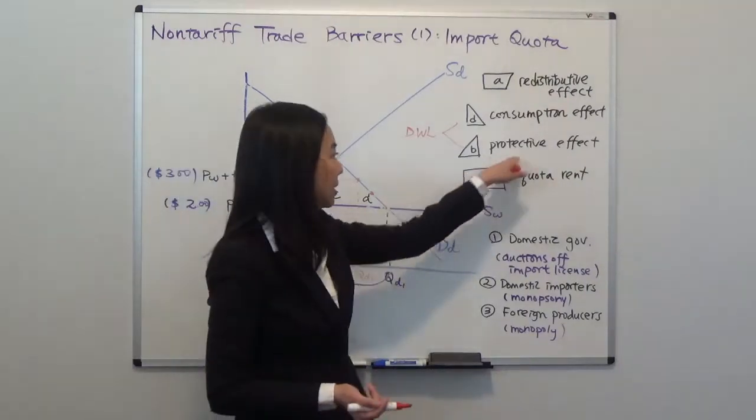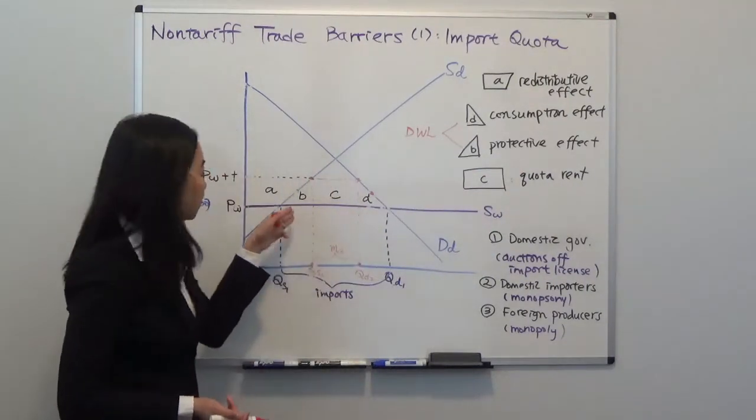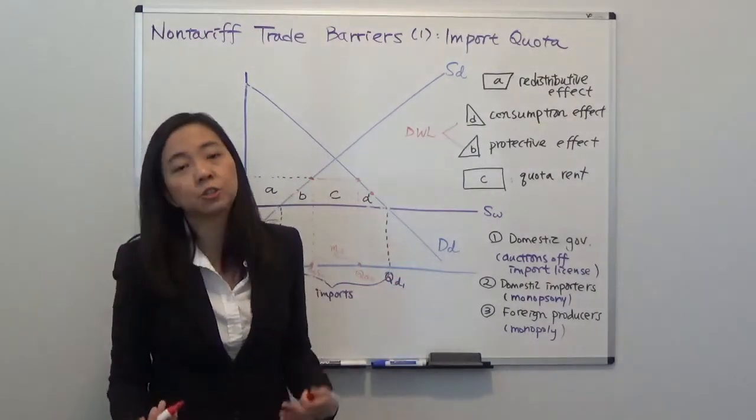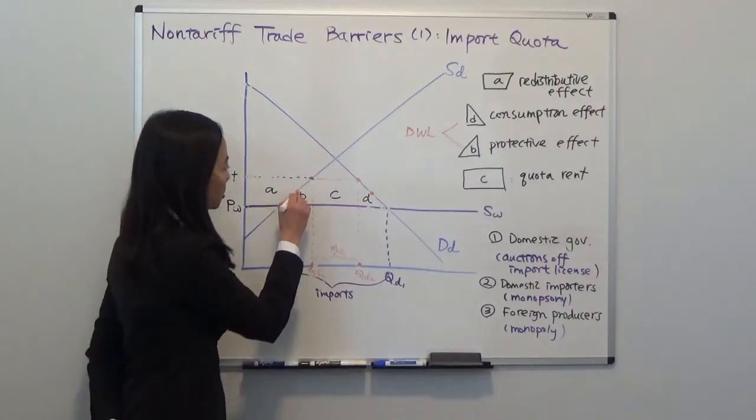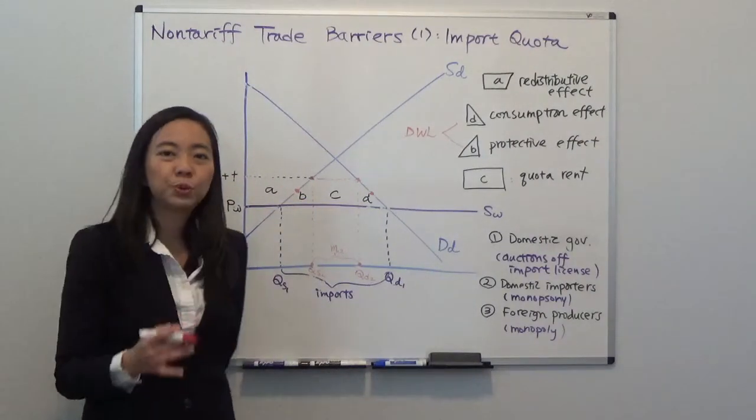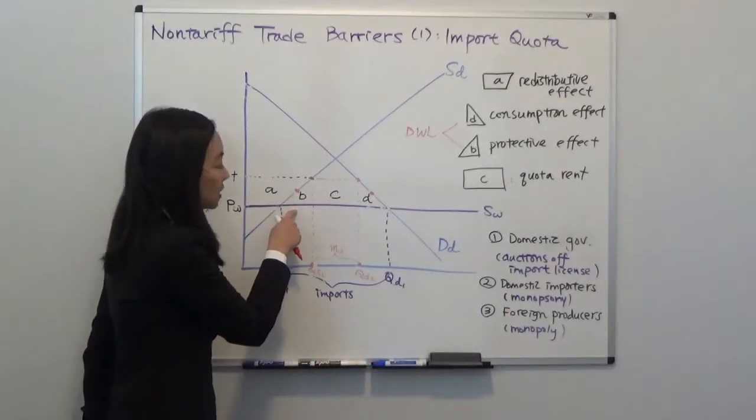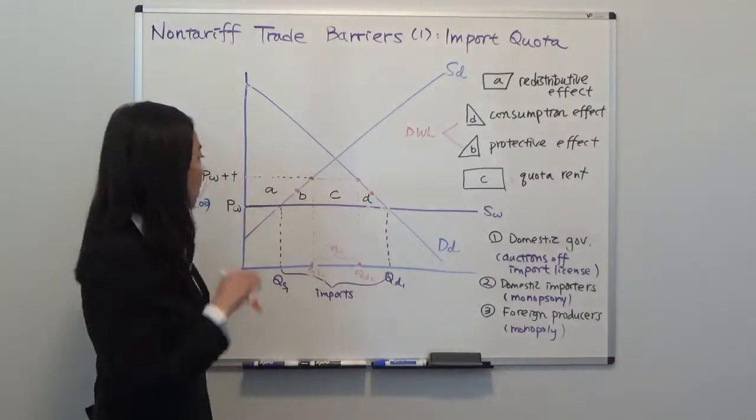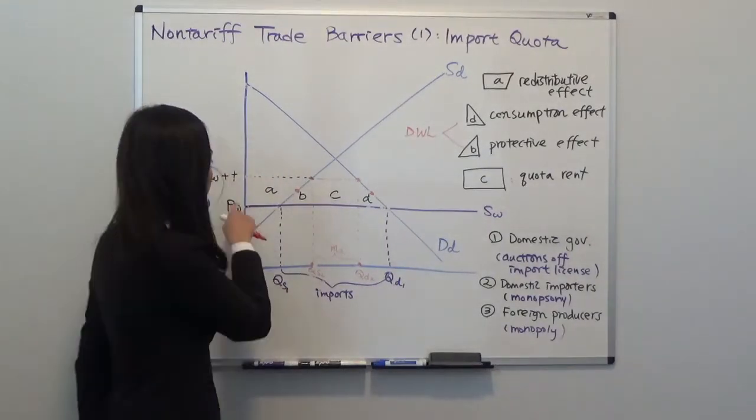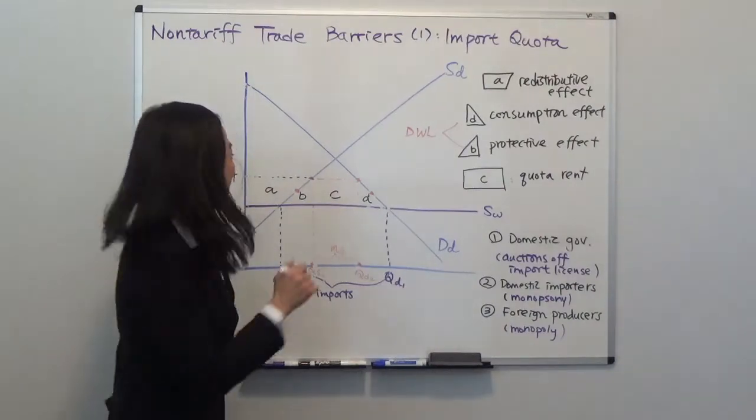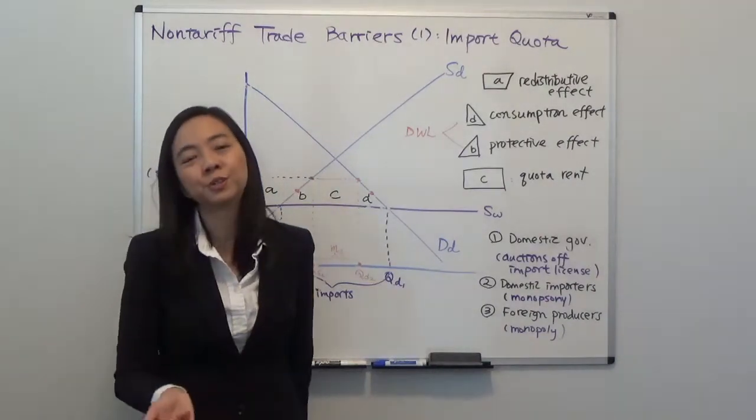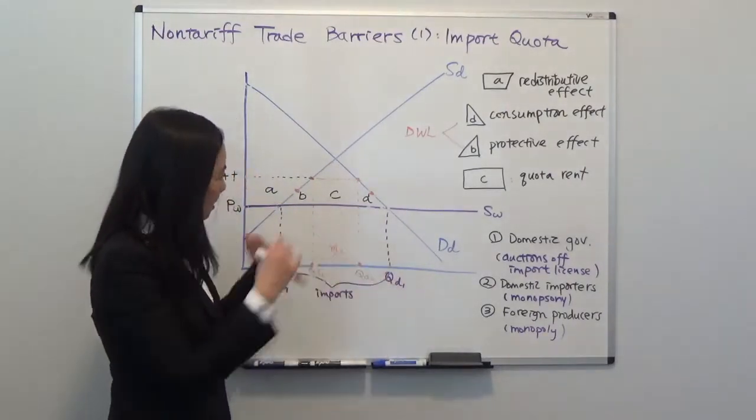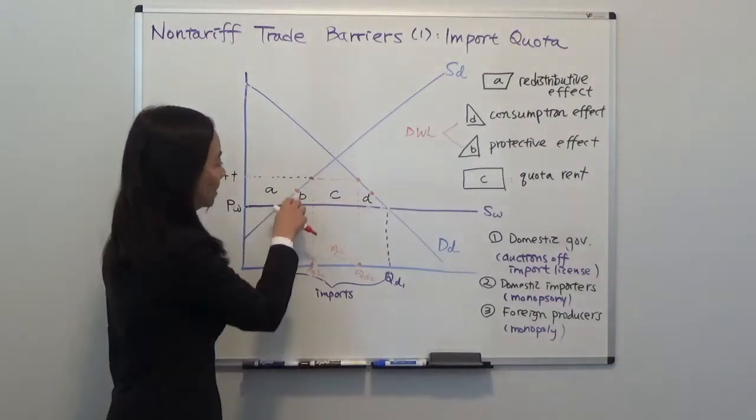And protective effect is area B. It's very similar to before. We are replacing the efficient foreign producer with inefficient domestic producer. So suppose that's your cost. You're a domestic producer. And without quota restriction, the price was PW. So you look at the price that's lower than your cost, so you choose not to produce it. And now with quota restriction, price has gone up to PW plus T. And your cost is lower than that, so you choose to produce. And we're replacing the more efficient foreign producer with inefficient domestic producer. So that's deadweight loss.